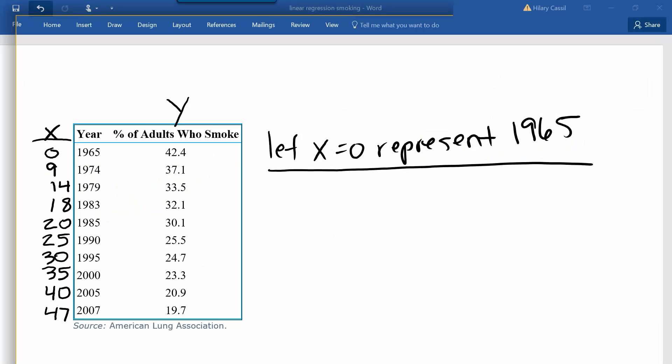So now we're going to take an alternate look at finding an equation of a line for this situation using linear regression on the calculator. So I'm going to pull up my calculator and I want you to follow along on your calculator and do the same steps.